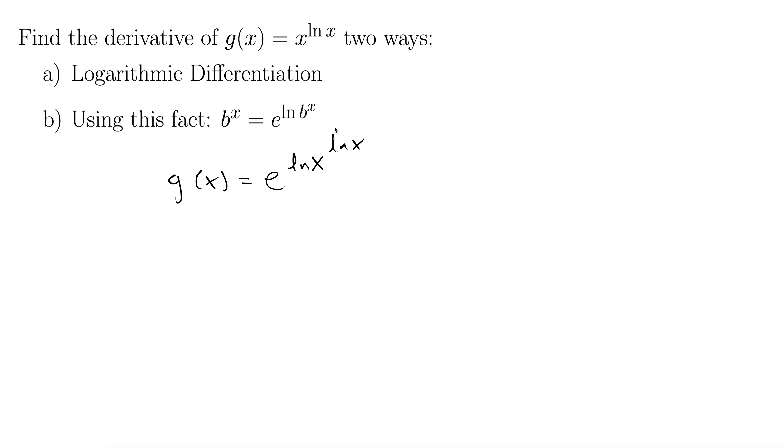Let's use the properties of logarithms now to get this natural log up in the higher exponent down one level. That's just the properties of logarithms. So then we have g(x) equals e to the natural log x times natural log x.